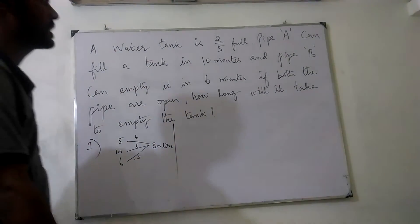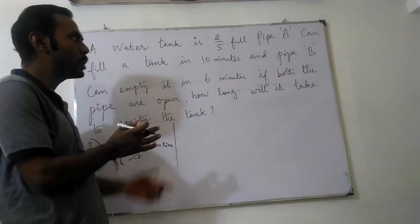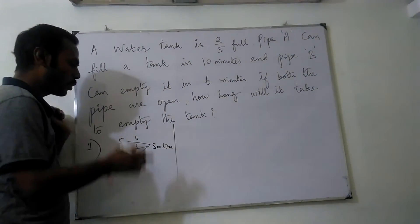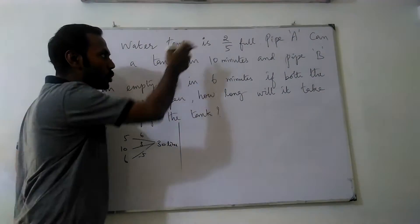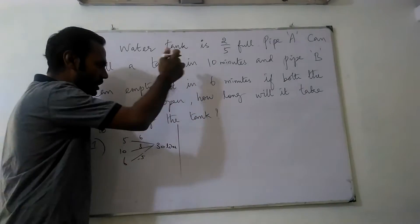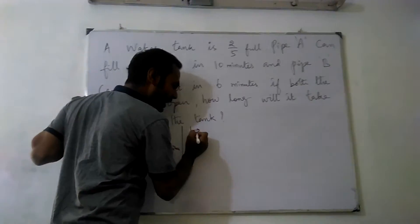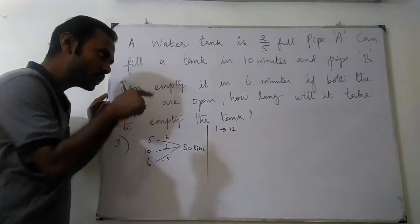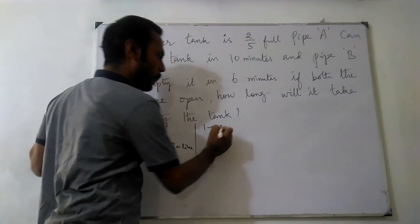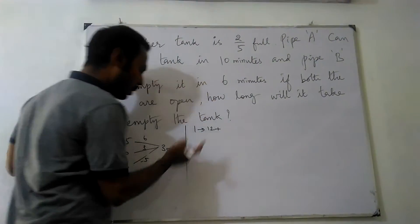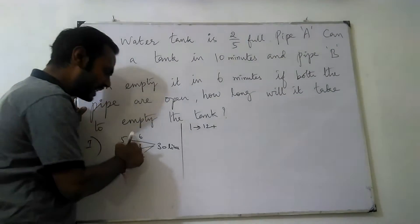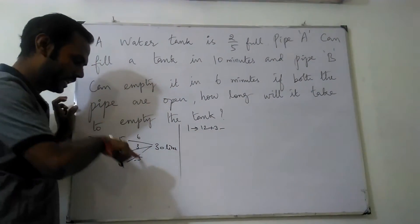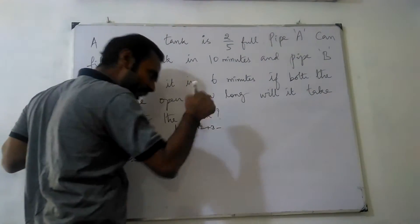The given question states the tank is already 2/5 full. So 1/5 is 6 liters, and 2/5 is 12 liters. The tank already contains 12 liters. Pipe A fills 3 liters per minute, and Pipe B empties 5 liters per minute.